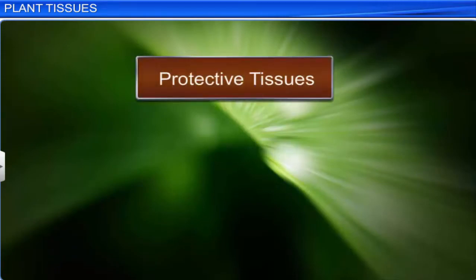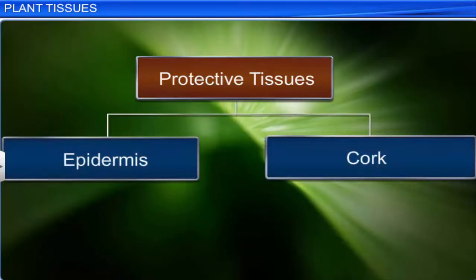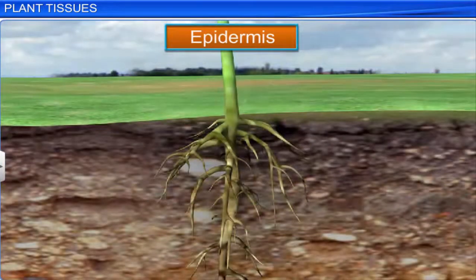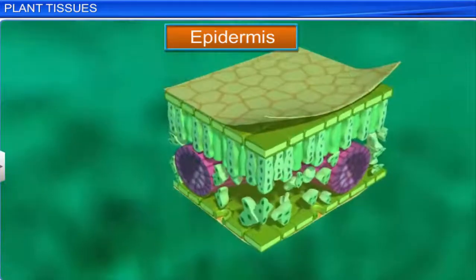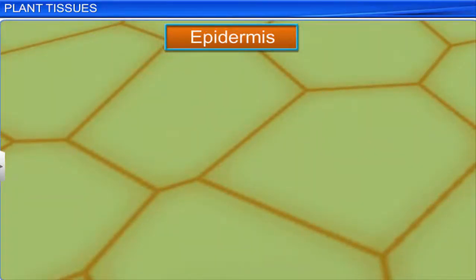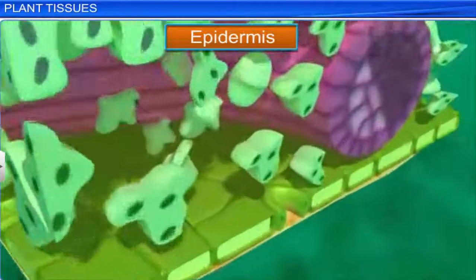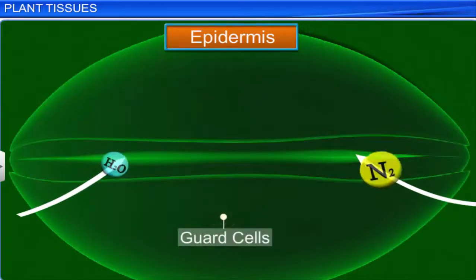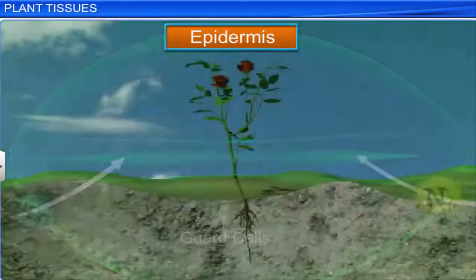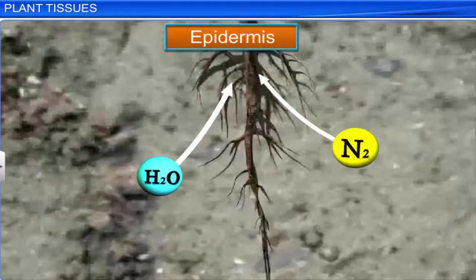Another important tissue for plants is protective tissue, which protects plants from the surroundings. Protective tissues include epidermis and cork. Epidermis is the outermost protective layer of roots, stems, and leaves. It is one cell thick and covered with a waterproof layer called cuticle. These cells are continuous, flat, and have no intercellular spaces. The epidermis is perforated by the presence of stomata, which are surrounded by guard cells and help in gaseous exchange and loss of water. Epidermis cells of the root bear hair-like structures that help in absorption.